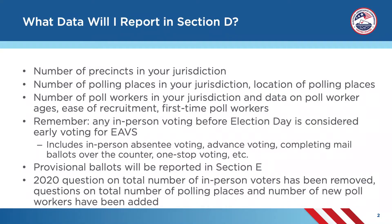Section D of EAVS asks about in-person polling operations in the 2022 general election. You'll report a few types of data. First, how many precincts did your jurisdiction use? Second, how many polling places did your jurisdiction use and what type of polling place locations were in use? Finally, how many poll workers did your jurisdiction use for this election and what were the characteristics of those poll workers?